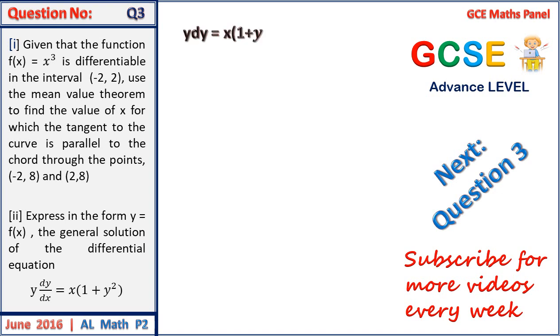The first thing we have to do here is to separate the variables and y dy is equal to x into 1 plus y squared dx. We now bring everything on one side, we have y on 1 plus y squared dy is equal to x dx.